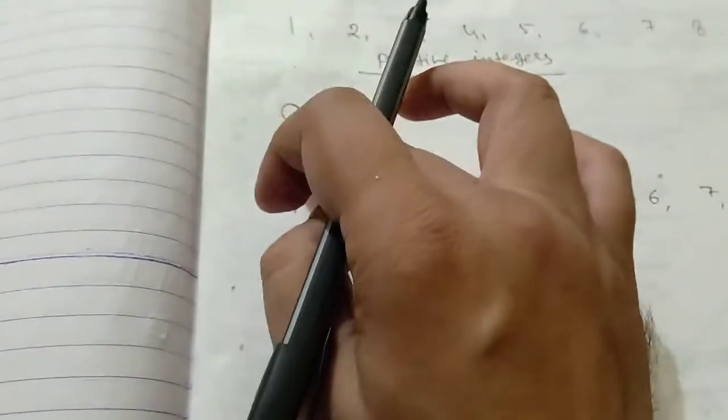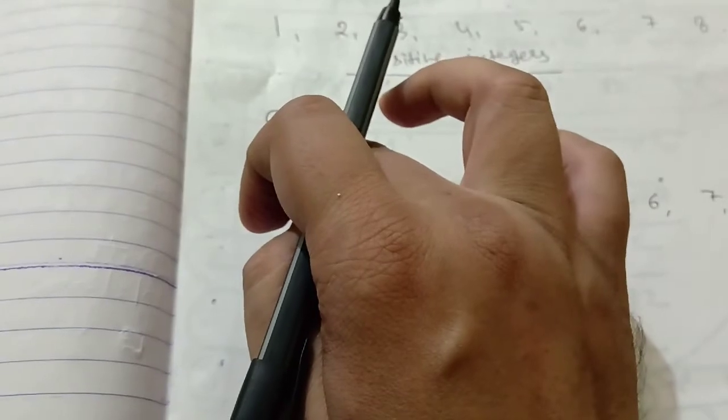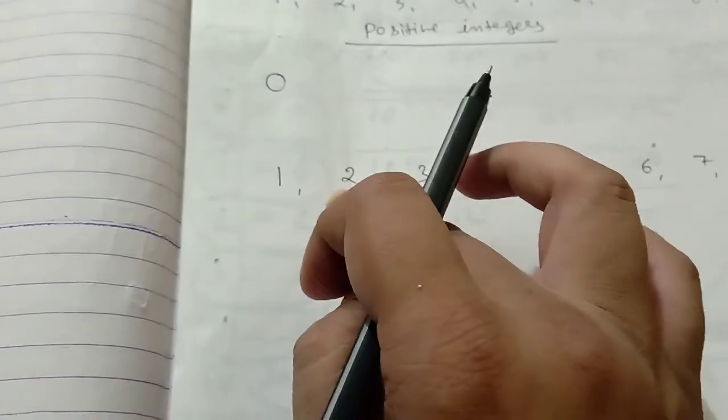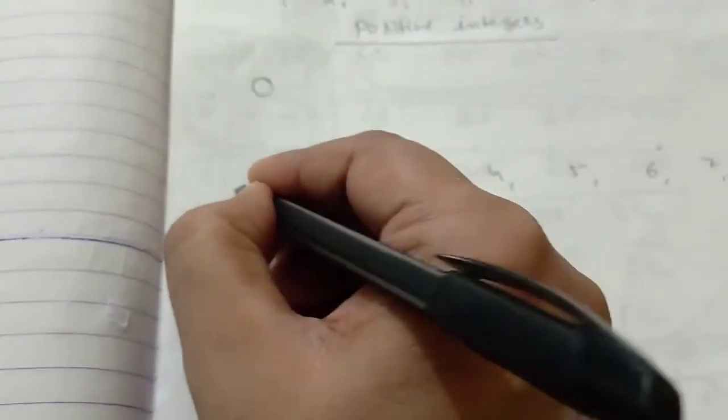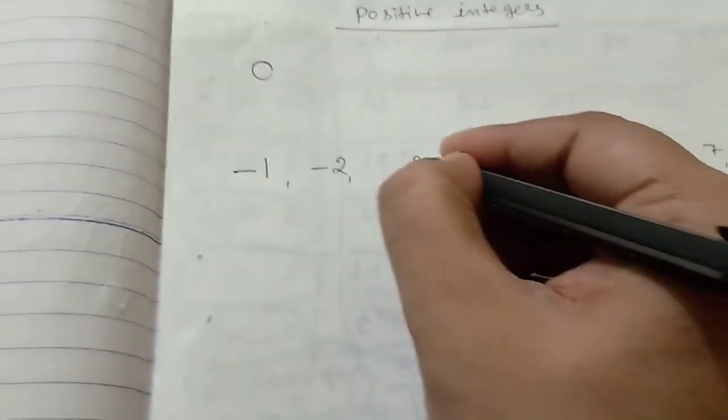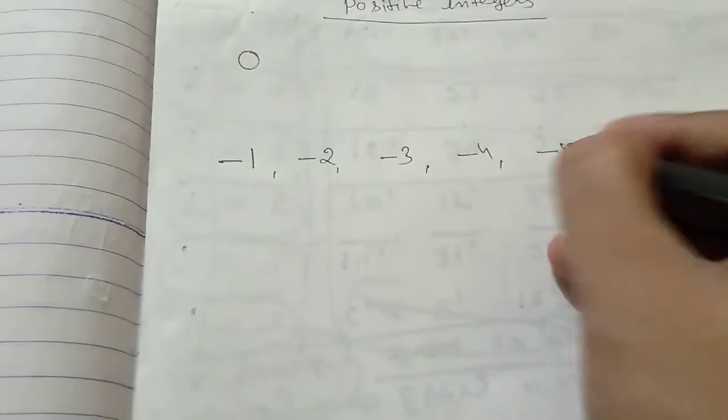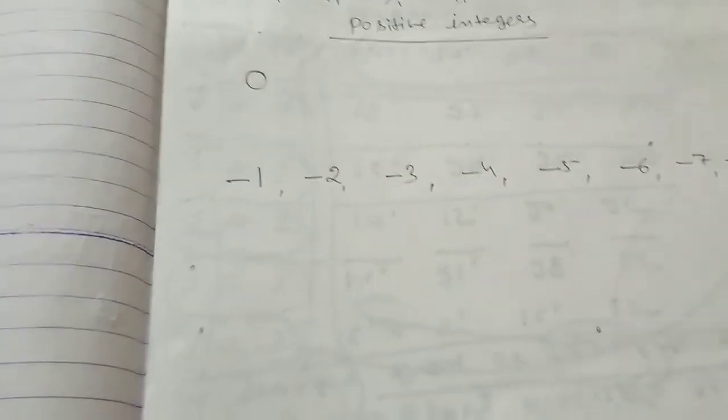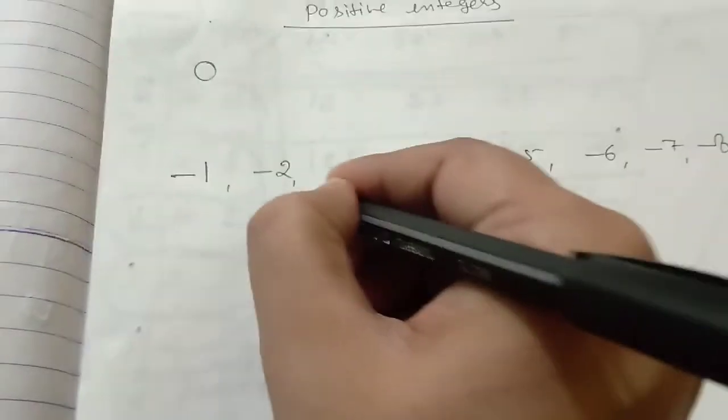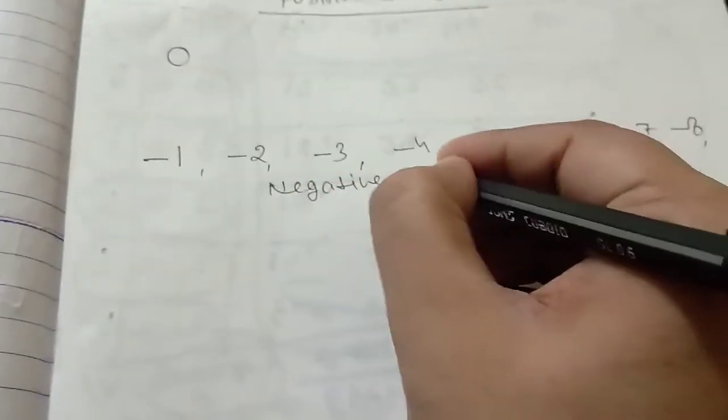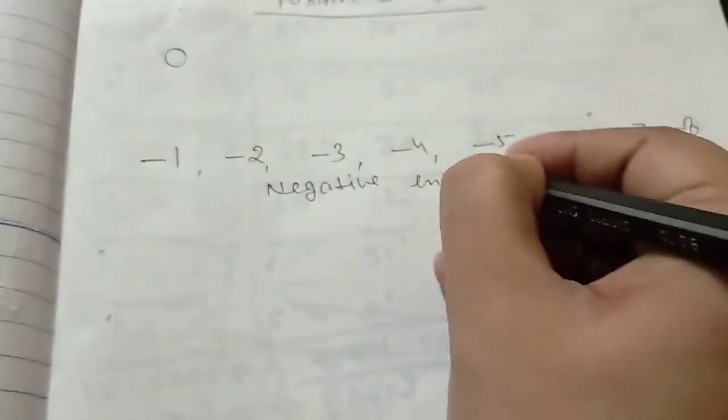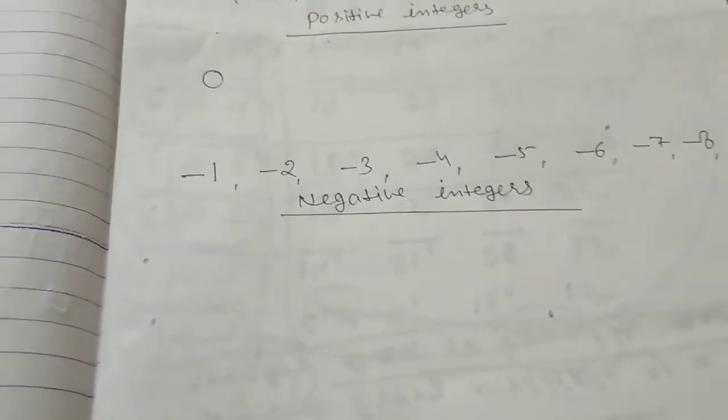Now, I will leave 0 right now. First, I will come here. This is a minus symbol, and if you write a minus symbol on these numbers, these numbers become negative. So they are called negative integers.